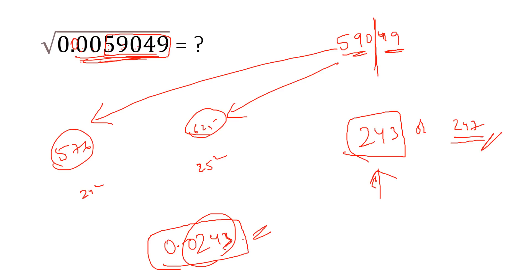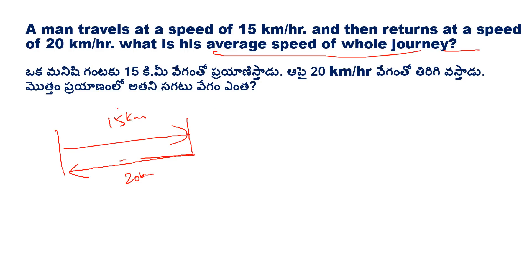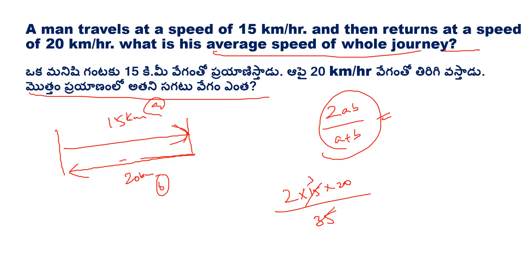The answer is clear. For the next question involving average speed, the answer is 120 by 7 km per hour.